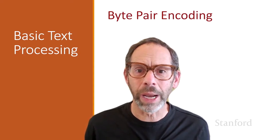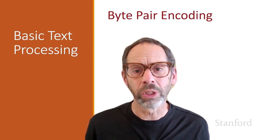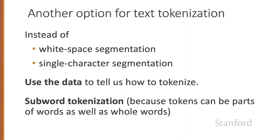In this lecture, we introduce the byte pair encoding or BPE algorithm, which uses corpus statistics to decide how to segment a text into tokens. Instead of just breaking up words at every white space, or as we saw for Chinese, breaking up words at every character, the algorithms we're going to introduce now use the data to tell us how to tokenize. This family of algorithms is often called subword tokenization, because the tokens can be parts of words as well as whole words.